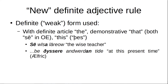The new rule for use of the definite adjectives — and I say 'new' in quotes because Old English is a thousand years old — basically, when we started using the word 'the,' we kept using the definite endings, so they kind of became linked. The first place that you would use the weak forms is with the definite article 'the' and the demonstrative 'that,' which are both the same word, se, and also 'this.'